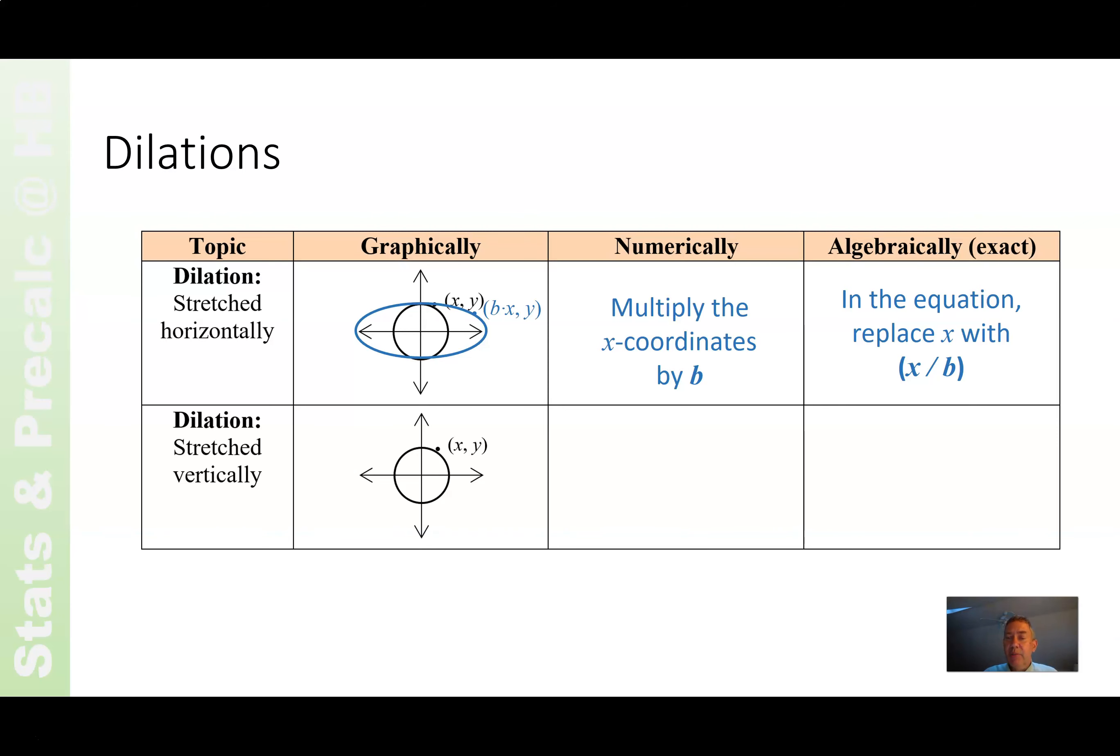And again, if you replace x with x divided by b in the equation, and you put in this point, b times x, when you get to it, it will cancel it back out and get you back to the original x. If it's vertically, the x coordinates stay the same, but the y coordinates get multiplied by a. We're in good shape here. And algebraically, guess what? See if you can guess. In the equation, replace y with y over a. Hope that's what you guessed. Life is good.